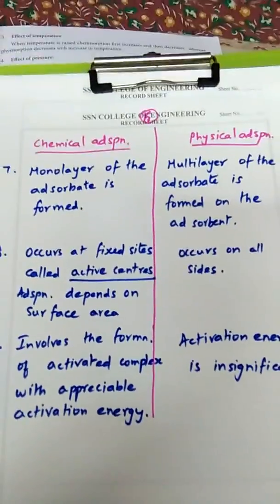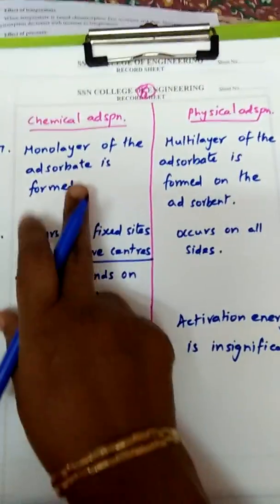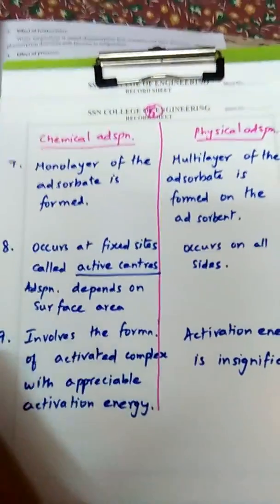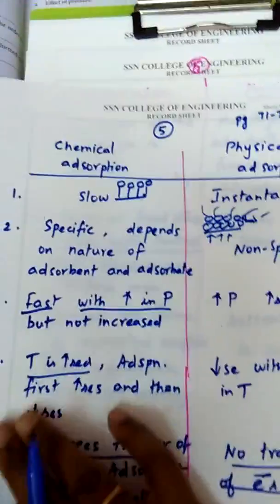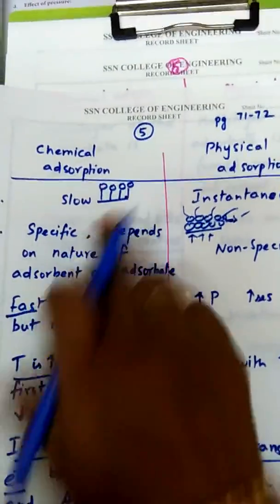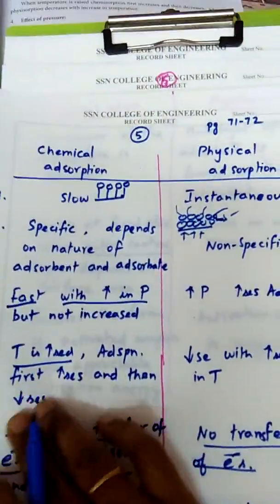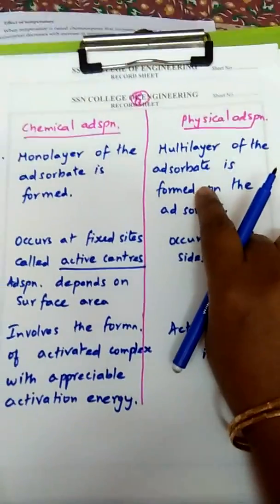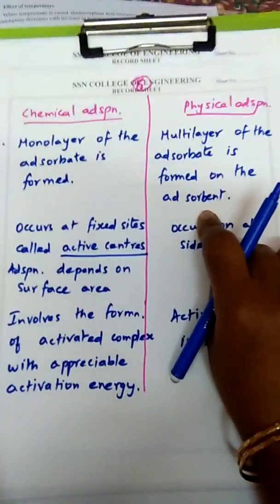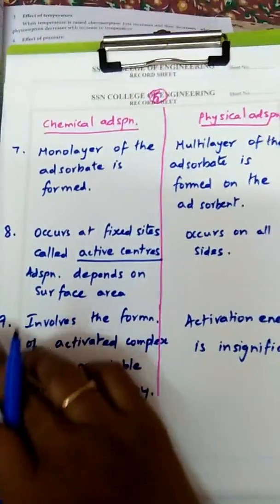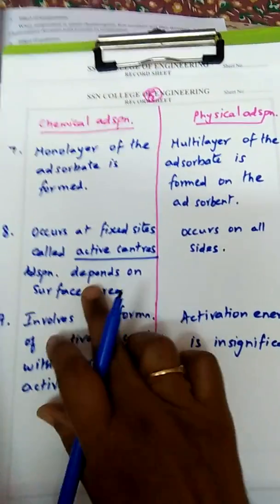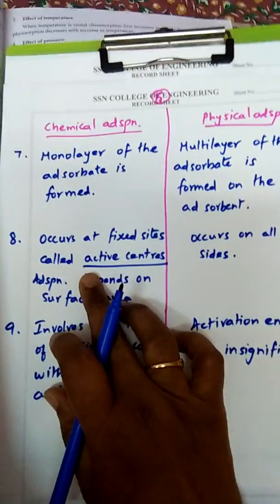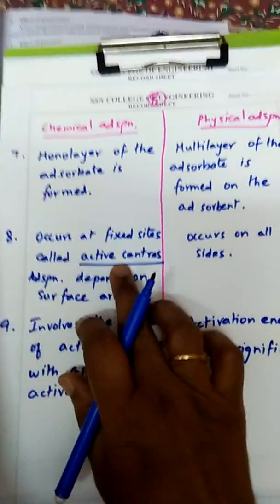The seventh point: in chemical adsorption, a unimolecular — monolayer — of the adsorbate is formed; only one layer of molecules gets adsorbed onto the surface. In physical adsorption, multiple layers of adsorbate are formed on the adsorbent. The eighth point: chemical adsorption occurs at fixed sites called active centers.